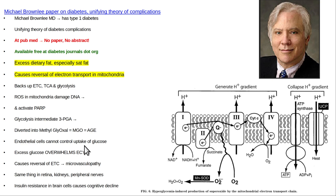Because you have insulin resistance in the skeletal muscle cells, normally after you eat — postprandial — the majority of your glucose should be taken up into the skeletal muscle cells and stored as glycogen. However, when the skeletal muscle cells are insulin resistant, they don't take up that glucose. A lot of it gets stuck in the blood and you have postprandial hyperglycemia. Some of that excess blood glucose goes to the liver, and the liver progressively becomes fatty.